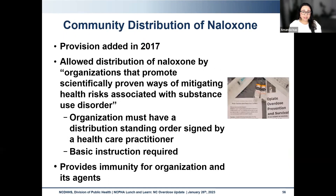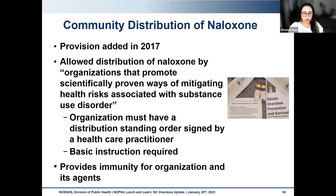We know that dispensing from pharmacies is nowhere near enough and in a lot of cases is not the most realistic option for folks who are uninsured, underinsured, or don't want to go into a pharmacy and request naloxone due to fear of stigma. In 2017, access to naloxone was expanded when a provision was added to the law allowing organizations that promote scientifically proven ways of mitigating health risks associated with substance use disorder to distribute naloxone. That includes syringe service programs, local health departments, shelters, community coalitions — pretty much anyone on this call. The only two legal requirements for community-based organizations to distribute naloxone are: they must provide recipients with education on how to use the kit, and they must have a distribution standing order signed by a medical prescriber.